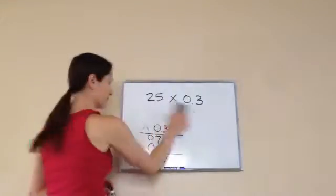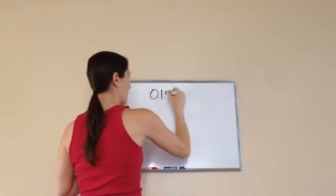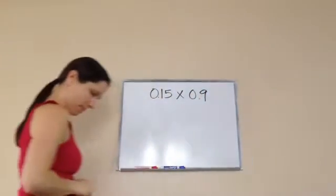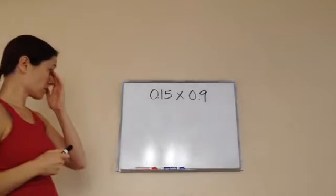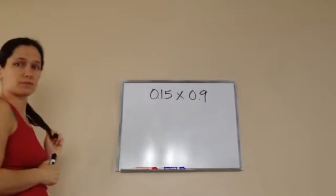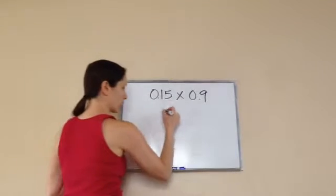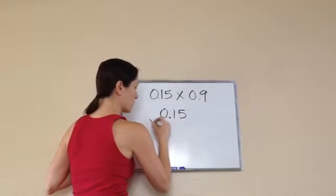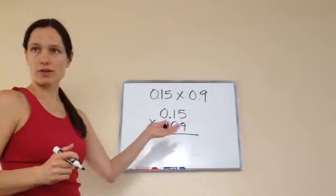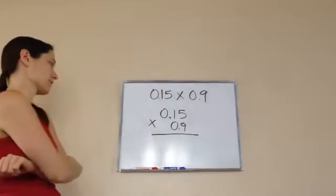I want you to try one by yourself. Okay? 0.15 times 0.9. 0.15 times 0.9. So I wouldn't line up. I would just line up your numbers. So this is what it would look like. I think I did it right. Yeah. That's what I did. You just want to pretend like the decimal is not there and how you would set it up and then put the decimals in.